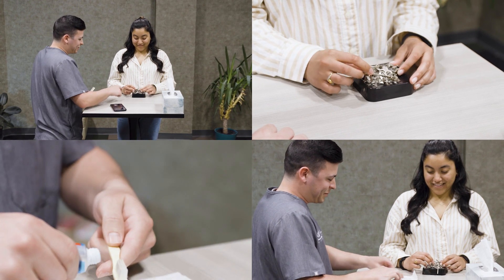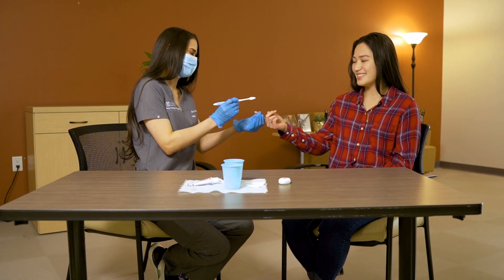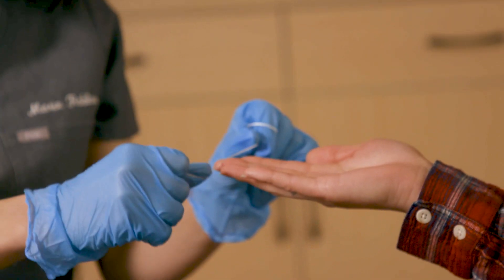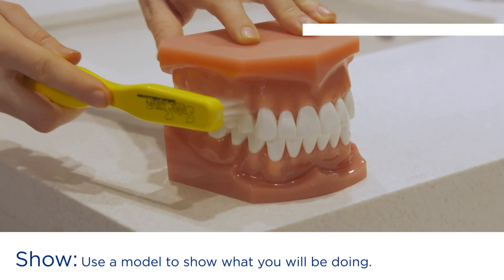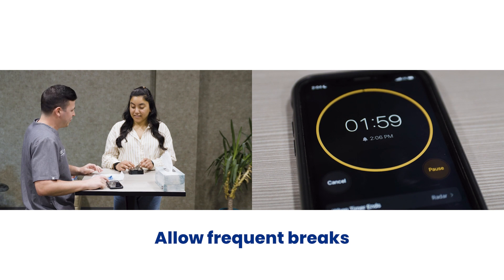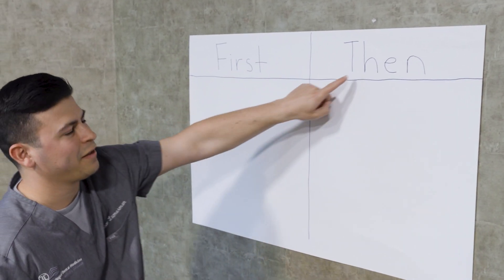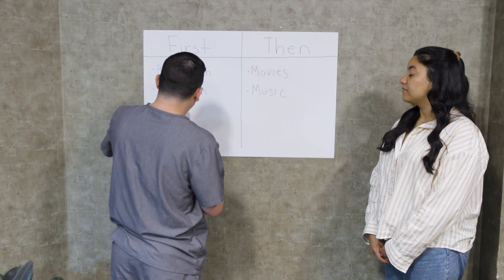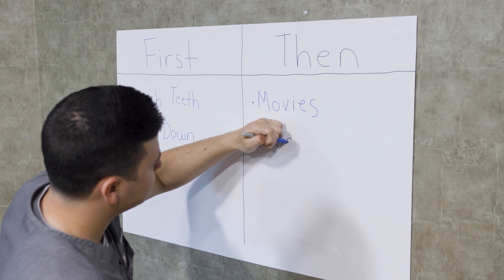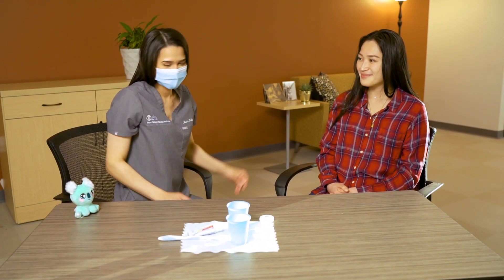During the home care routine, provide preferred items for the individual to hold or manipulate. Keep routines well organized and consistent. Communication should be clear and concise — let them know what you are doing before each step. This approach is often referred to as tell, show, do. Consider a timer that allows the individual to count down the time to a break or the completion of the routine. Some individuals may benefit from first-then contingencies, such as 'first brush teeth, then movies,' while others may require first-then to be utilized repeatedly throughout, such as 'first sit down, then music, then brush top teeth, then break.'